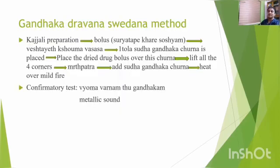First, the Gendaka Dravana Swetana method. Like other Rasayanas, mercury and sulphur are the principal ingredients. Initially, we have to prepare the Kajali and then make it into a Bola form. The Bola is then dried well — Suryatape Khara Shosha — until it attains the desired consistency and hardness. A silk cloth is taken, and one Dola of Shuddha Gendaka Churna is placed over it, and the dried drug bolus is kept over this Churna.